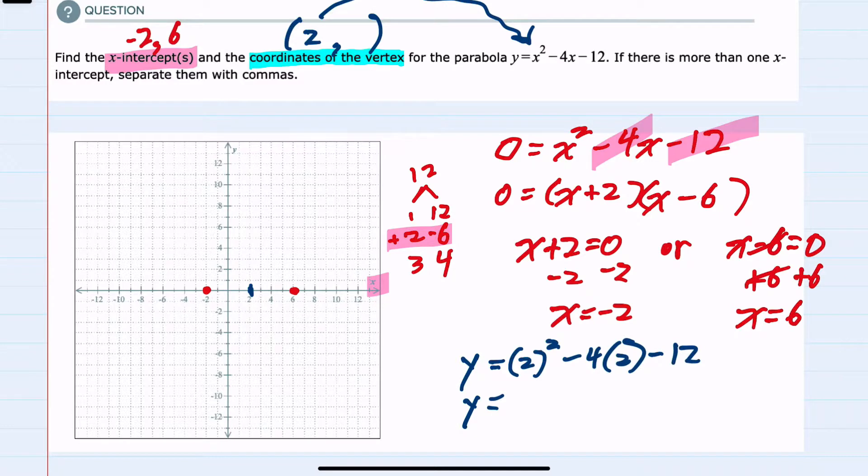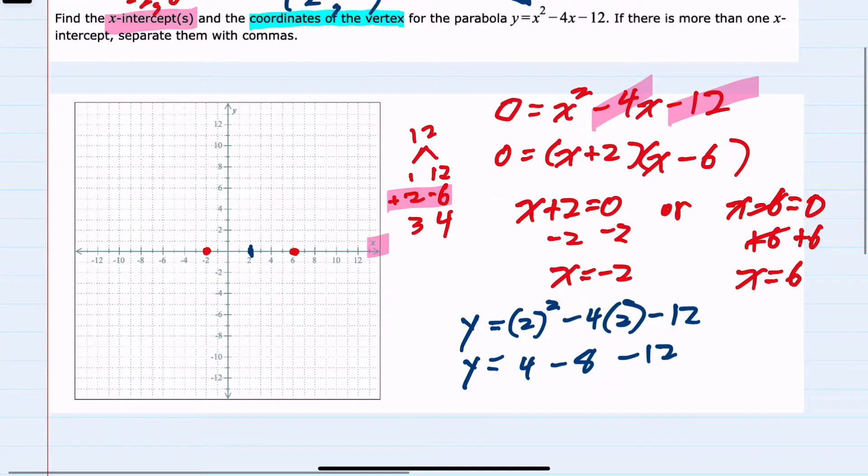We can simplify on the right. 2 squared is 4, minus 4 times 2 is minus 8, minus 12. So again simplifying, y equals 4 minus 8 is negative 4, minus 12, negative 16. So our coordinate would be 2, negative 16.